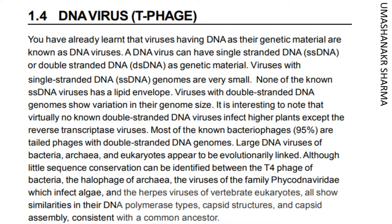Although little sequence conservation can be identified between the T4-phage of bacteria, the halophage of archaea, the viruses of the family Phycodnaviridae which infect algae, and the herpes viruses of vertebrate eukaryotes, all show similarities in their DNA polymerase types, capsid structures, and capsid assembly, consistent with a common ancestor.